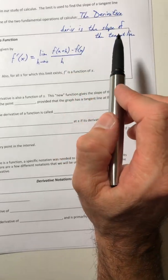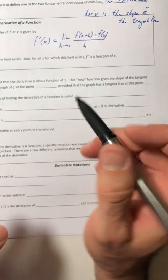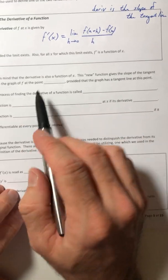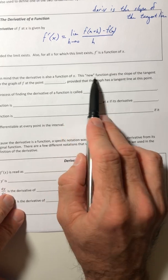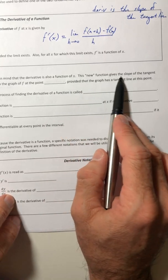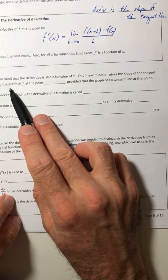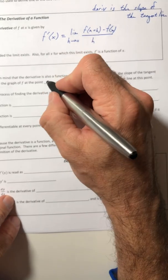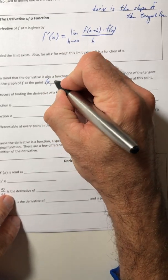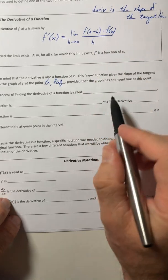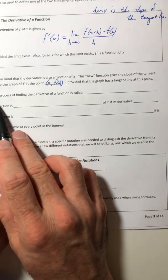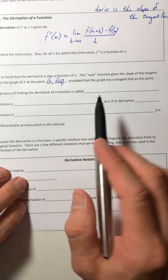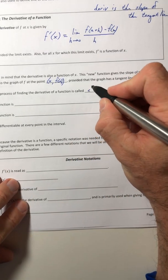So just kind of keep that in the back of your mind. Also keep in mind that the derivative is a function of x. So this new function gives a slope of the tangent line to the graph of f at the point (x, f of x), provided that the graph has a tangent line at this point. So the process of finding the derivative of a function is called differentiation.